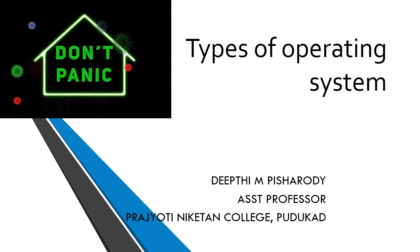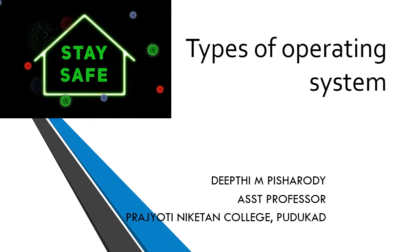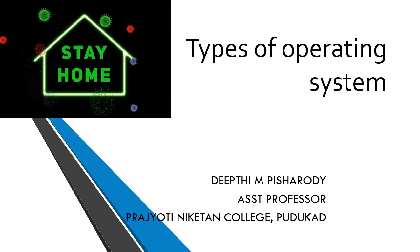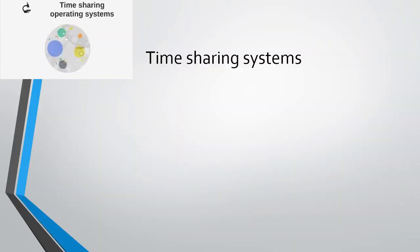Hello students. Shall we continue our types of operating systems? The next category of operating system is time-sharing operating system. Already we have seen batch processing operating system and multi-programmed operating system in the previous video.